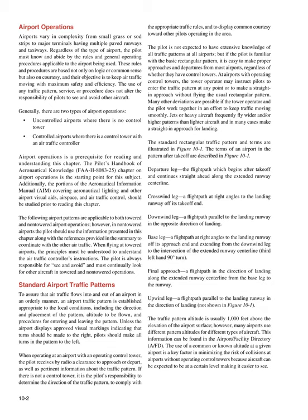Airports vary in complexity from small grass or sod strips to major terminals having multiple paved runways and taxiways. Regardless of the type of airport, the pilot must know and abide by the rules and general operating procedures applicable to the airport being used. These rules and procedures are based not only on logic or common sense but also on courtesy, and their objective is to keep air traffic moving with maximum safety and efficiency. Generally, there are two types of airport operations: uncontrolled airports where there is no control tower, and controlled airports where there is a control tower with an air traffic controller.